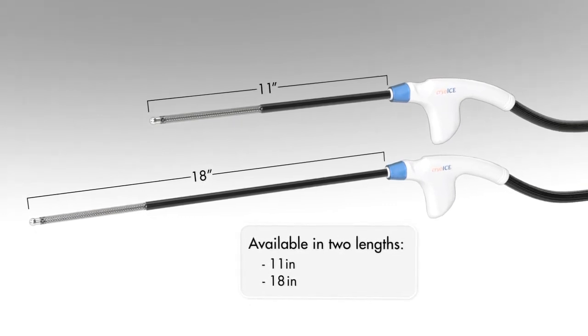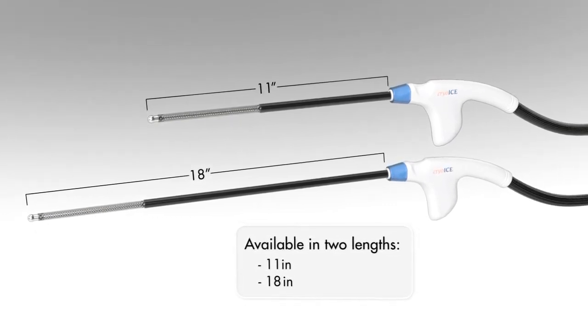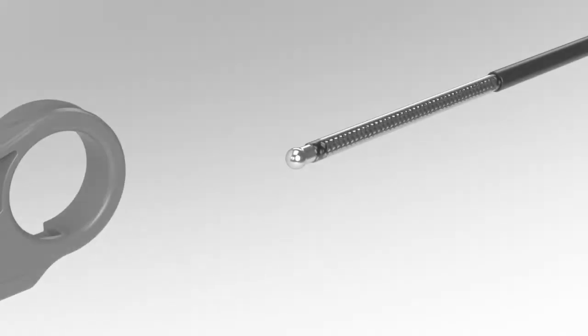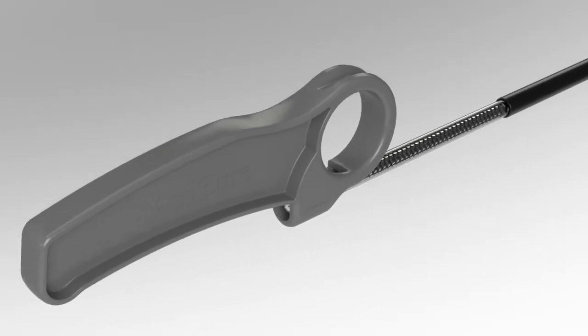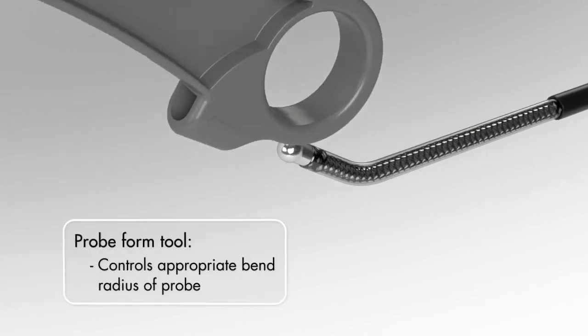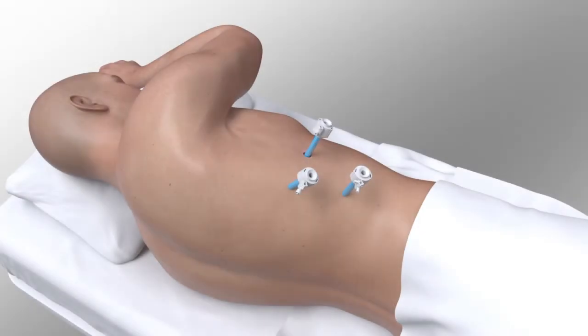The Cryosphere probe shaft is malleable and supports forming by the user via the supplied tool. Here a trocar access point is being opened and the Cryosphere probe is inserted.